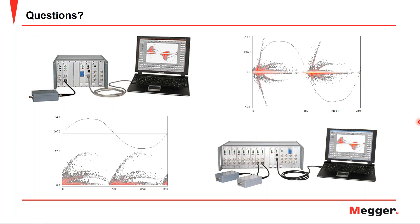The ICM system has an input sensitivity of 0.02 pC, making it a highly accurate system for partial discharge detection. That concludes the Q&A session for our first segment. If we didn't answer your question live, we will be reaching out offline in the next couple of weeks. Now we will hand control over to the second presenter for the field PD testing presentation.